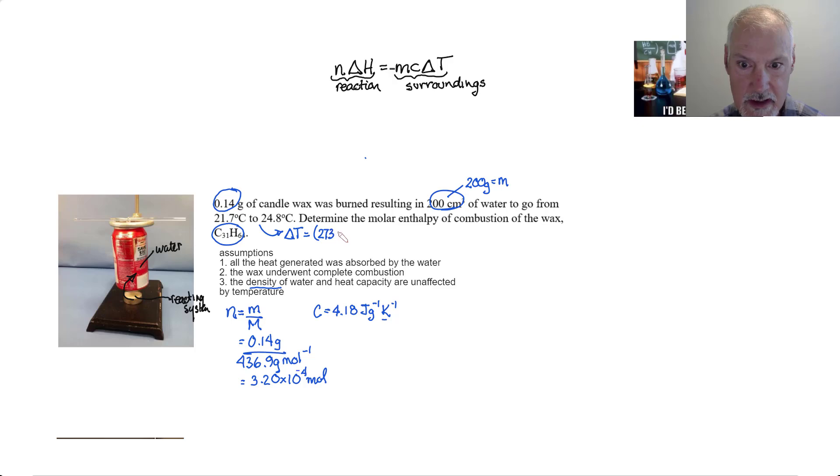minus the initial temperature which would be 273 plus 21.7. Well, you can see here that the 273s will essentially cancel. Converting these temperatures to Kelvin is really not going to get us any closer to the answer. We could have left them in Celsius and essentially arrived at the same temperature change. So, when we subtract those two from each other the temperature change is 3.1 Kelvin.